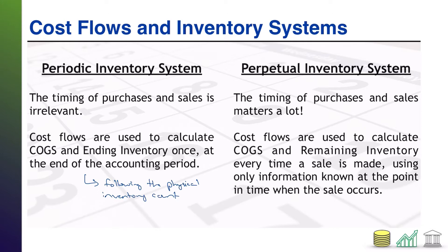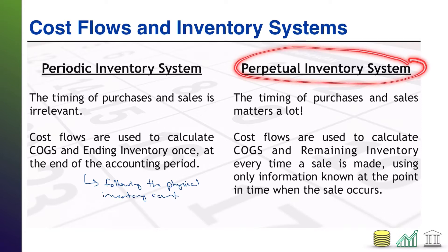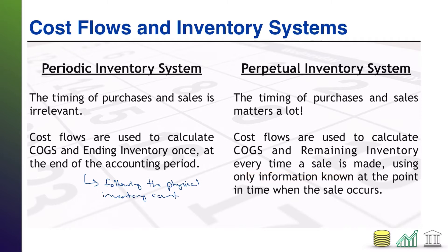Now, you may be wondering how that's any different from a perpetual system. In a perpetual system, COGS has to be calculated every single time a sale is made, which means you have to apply your cost flow based only on the information known at the point in time when the sale occurs. So whereas in a periodic system, by the time you get to the end of the period, every purchase you've made has already happened — in a perpetual system, at the time you make a sale, you may have only made one or two purchases so far and you've got to apply your cost flow specifically to just what has already happened. In other words, the timing of purchases relative to the timing of sales actually matters a whole lot. In this video, I do want to just focus on the easier of the two: the periodic system cost flows.